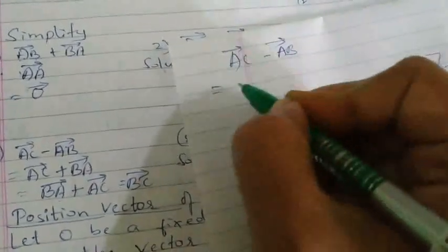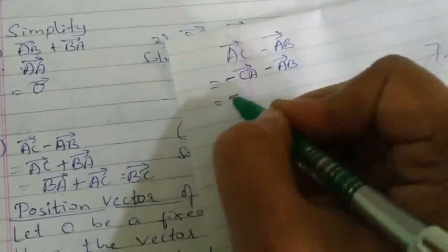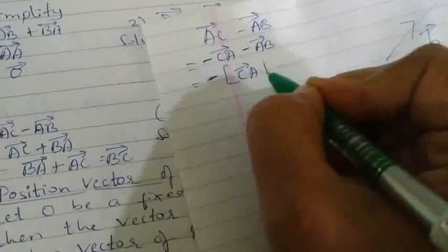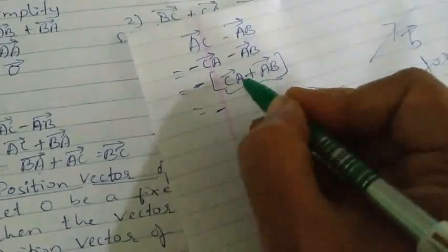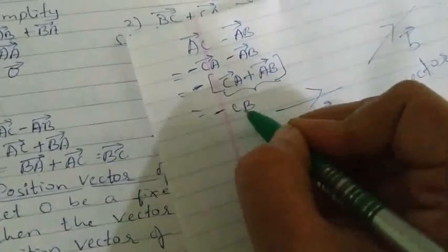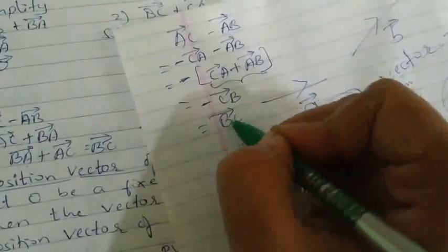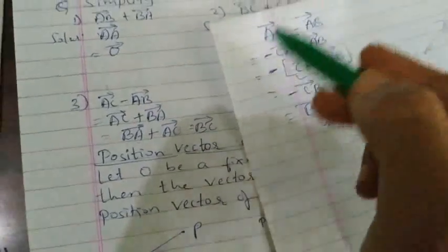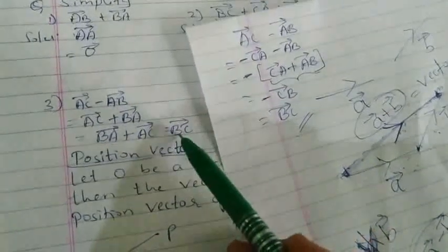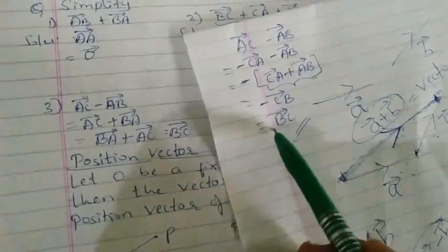Another approach: AC vector minus AB vector. Change the signs — minus becomes CA vector and minus AB gives AB vector. Taking minus common, we have minus of CA vector plus AB vector. Adding these two, AA remains the same, giving minus CB vector. Adjusting the sign, the answer is BC vector. Addition of two vectors always gives a unique result regardless of method, provided you follow the rules.